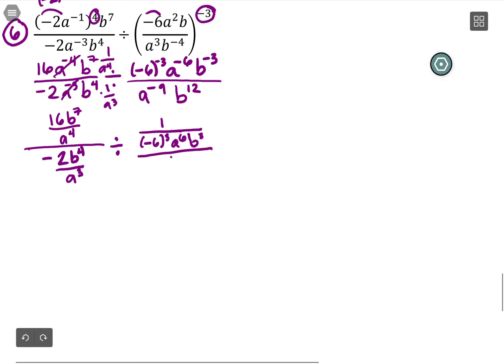On the bottom, b to the 12 is fine, but the a to the -9 is the same as 1 over a to the 9. Looks like a to the a, but it really is an a to the 9.